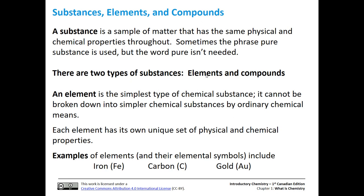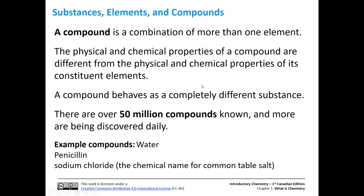You can look up the physical and chemical properties for any element on the periodic table. Notice how gold and iron — their symbols aren't just the first one or two letters of the common name we use. A compound is a combination of more than one element, and the physical and chemical properties of a compound are different from those constituent elements. For instance, if we take hydrogen gas and react it with oxygen to get water — hydrogen gas, oxygen gas, and water are totally different substances with different properties. There are over 50 million compounds known, and more are being discovered daily. Examples include water, penicillin, and sodium chloride.